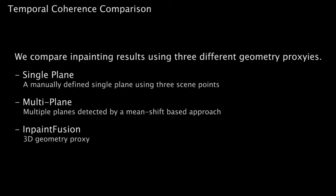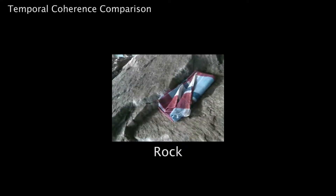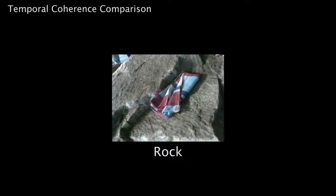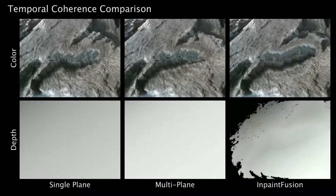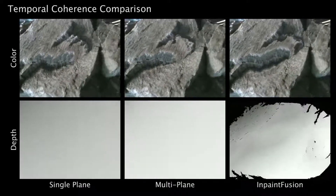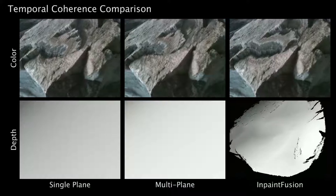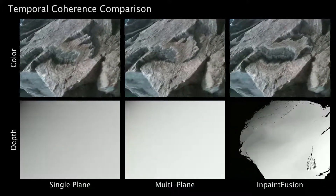Here, we compare in-painting results using three different geometry proxies: single-plane, multi-plane, and in-paint fusion. In in-paint fusion, owing to the image space color and depth in-painting and subsequent fusion of those images, the in-painted structure fits the 3D structure of the real rock, even though the camera changes the viewpoint.